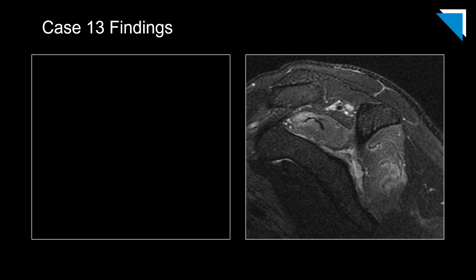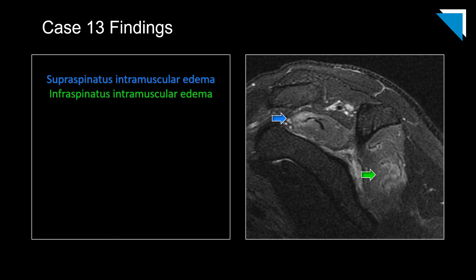We'll use an image from that sequence for a closer look at our findings. There is prominent edema in the supraspinatus muscle belly and similar findings in the infraspinatus muscle belly. Intramuscular edema in and of itself is a nonspecific finding.